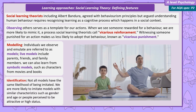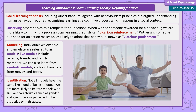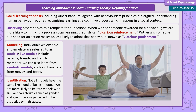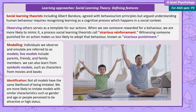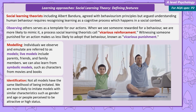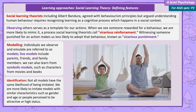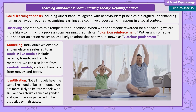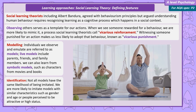Not all models are equally likely to be imitated. We're most likely to imitate models we identify with. These are models with similar characteristics to ourselves — things like gender and age — and we're also more likely to imitate models we see as high status.